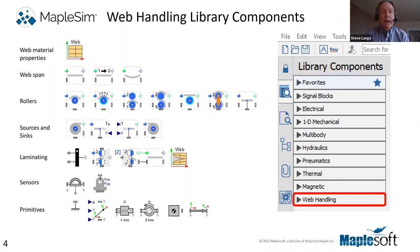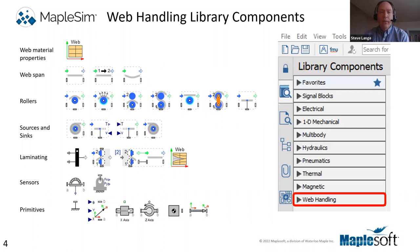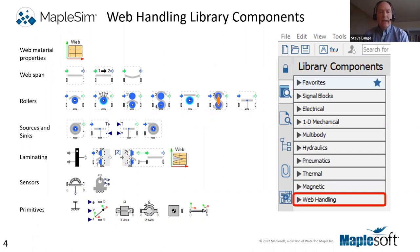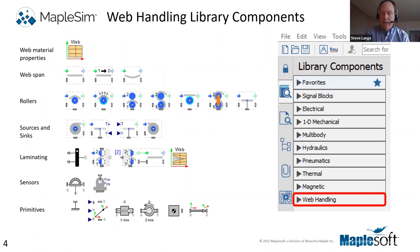You can also define things like tension and velocity into and out of the system. A relatively new item MapleSoft has added is the ability to model laminating of webs, so you can have multiple webs coming together commonly in a NIP. There are sensors that may be added — such as angle sensors or load cells for measuring tension — and primitive elements borrowed from other libraries to simulate machines like dancer arms or accumulator systems.